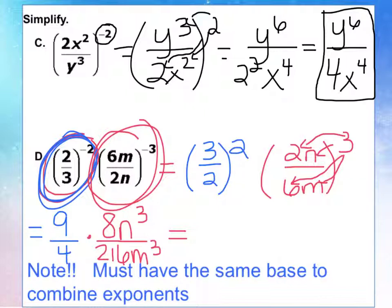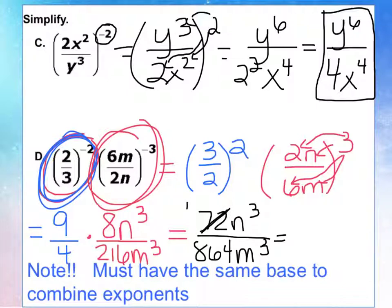So I get 9 times 8, which is going to give us 72, n to the 3rd power. And then I'm going to do 4 times 216, and get 864, n to the 3rd power. And I wonder if we could simplify that further. So I'm going to try to divide 864 by 72 and see what we get. 864 divided by 72 gets us 12. So then this cancels out and becomes a 1. This cancels out and becomes a 12. So our final answer is n to the 3rd over 12, m to the 3rd power.